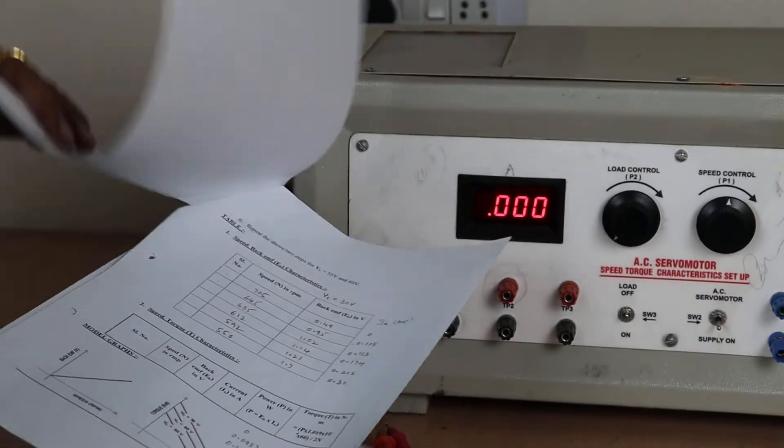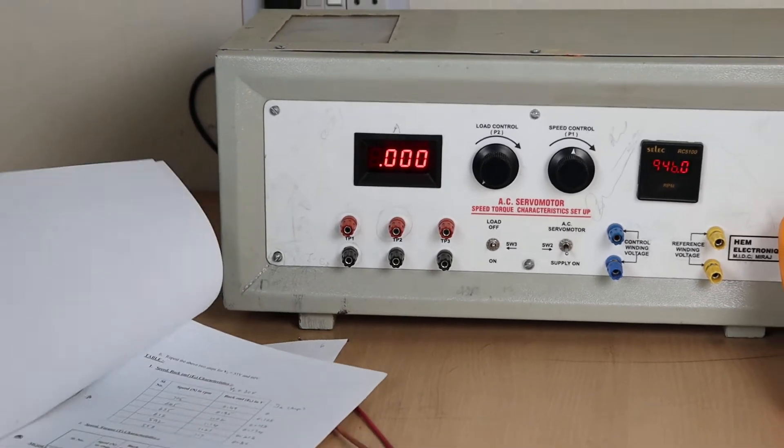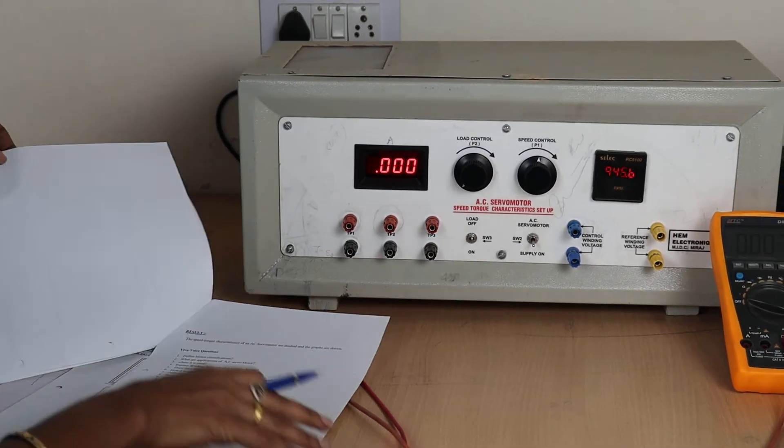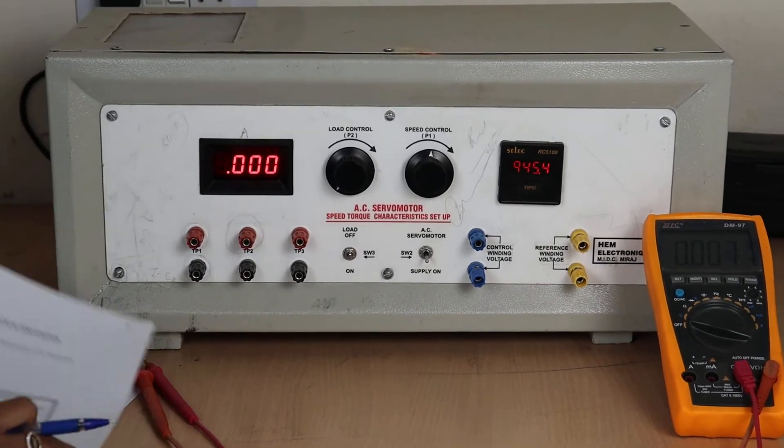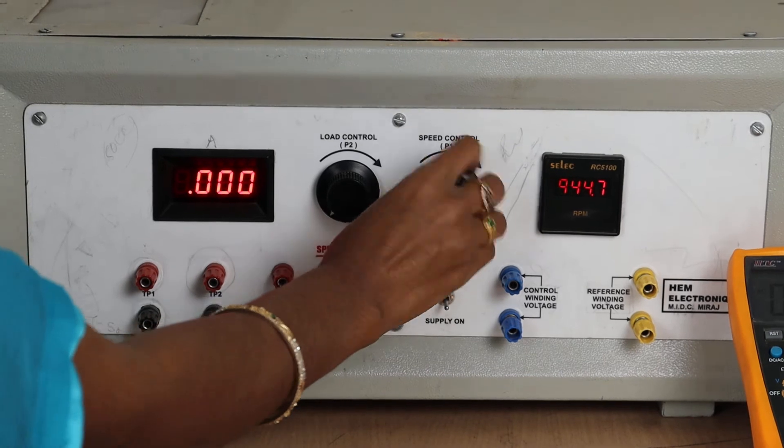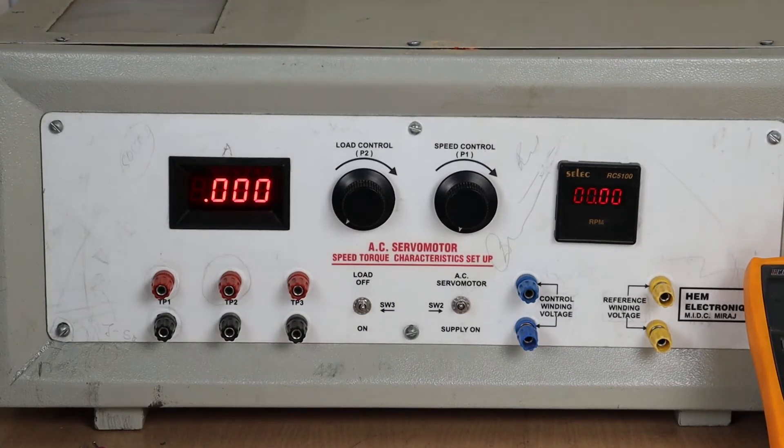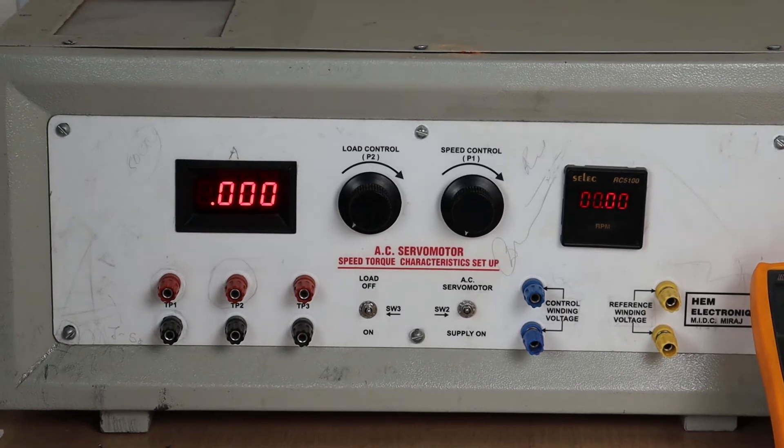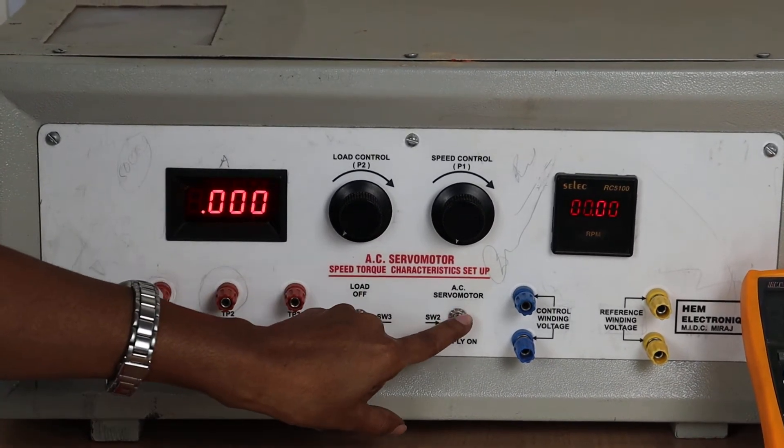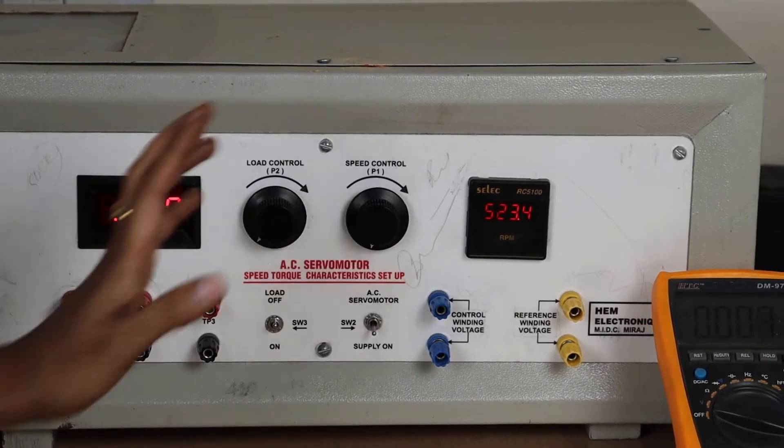In a similar way we have to plot the characteristics between torque and back EMF. So whenever we are talking about torque definitely we should apply some amount of load. So for that one again reduce this speed to 0 and turn off the supply to the AC servo motor.